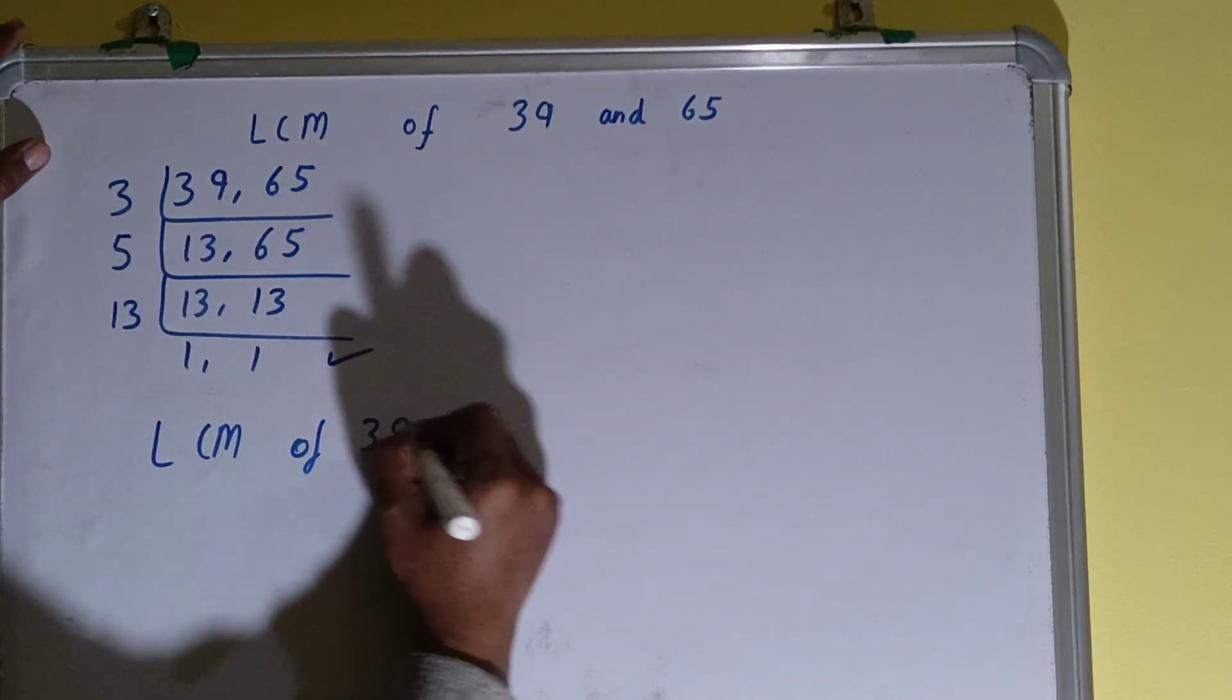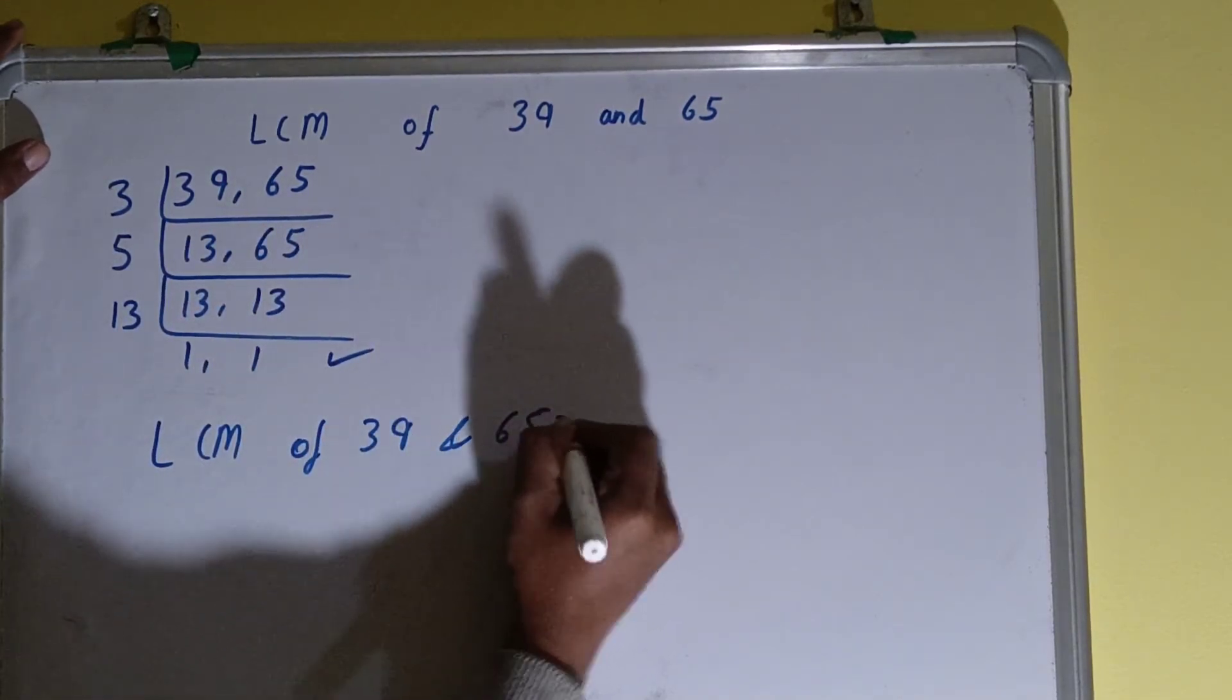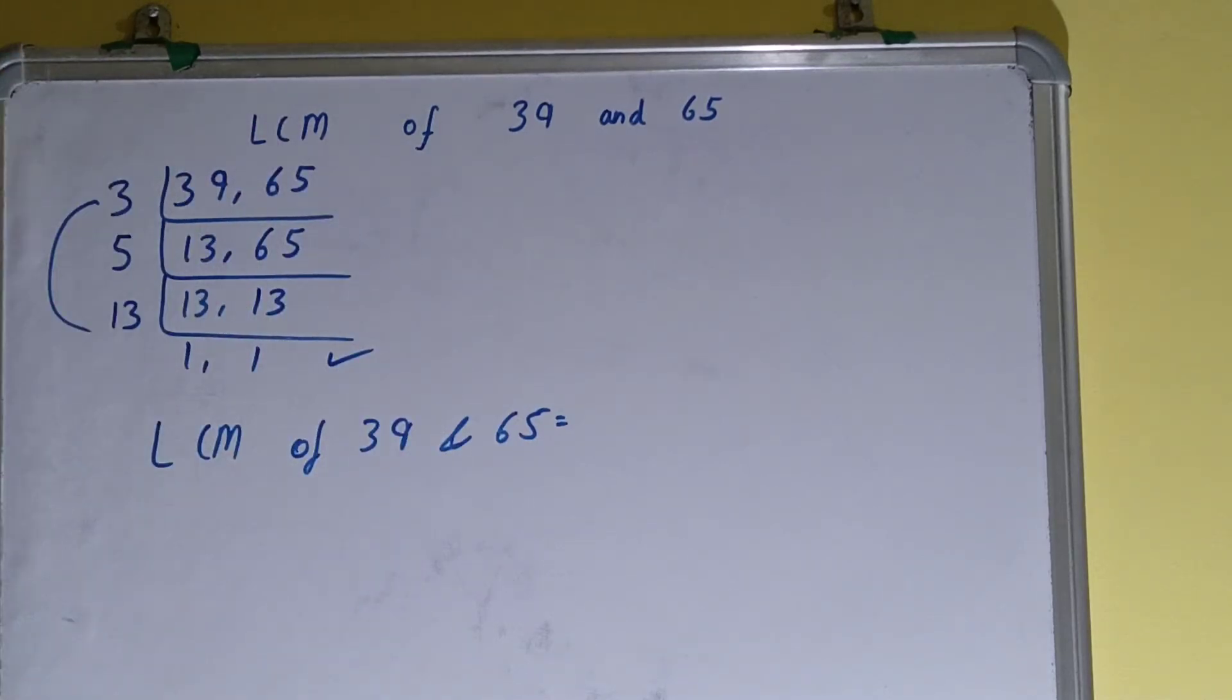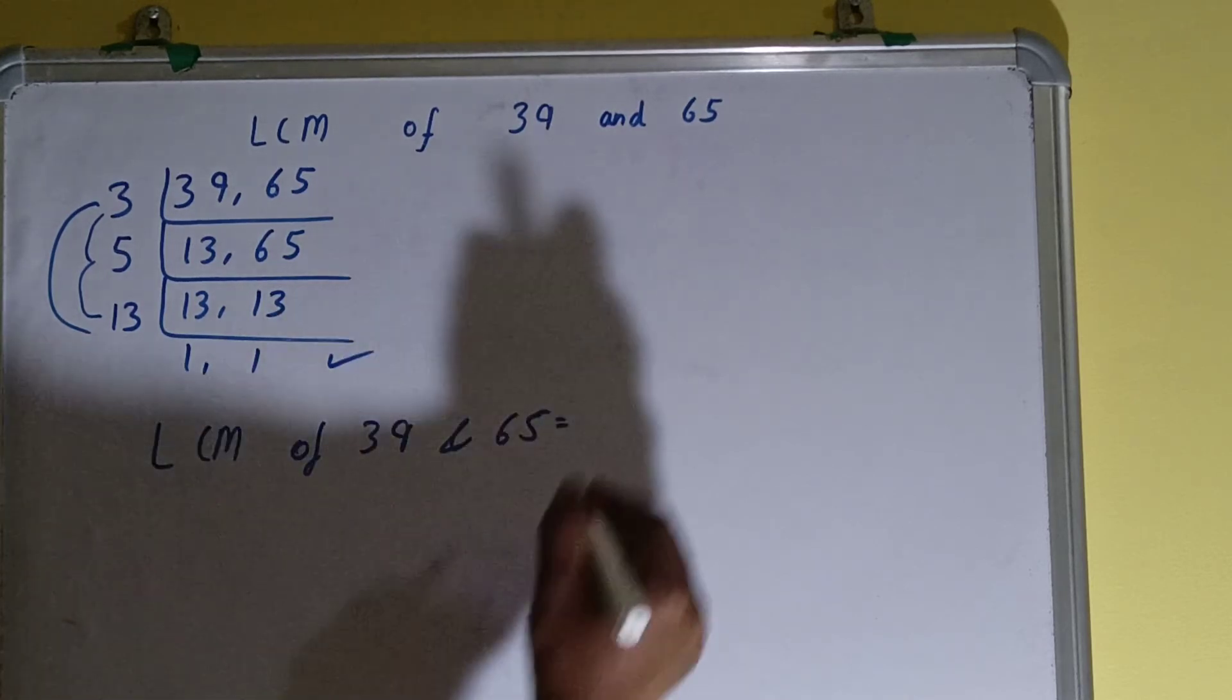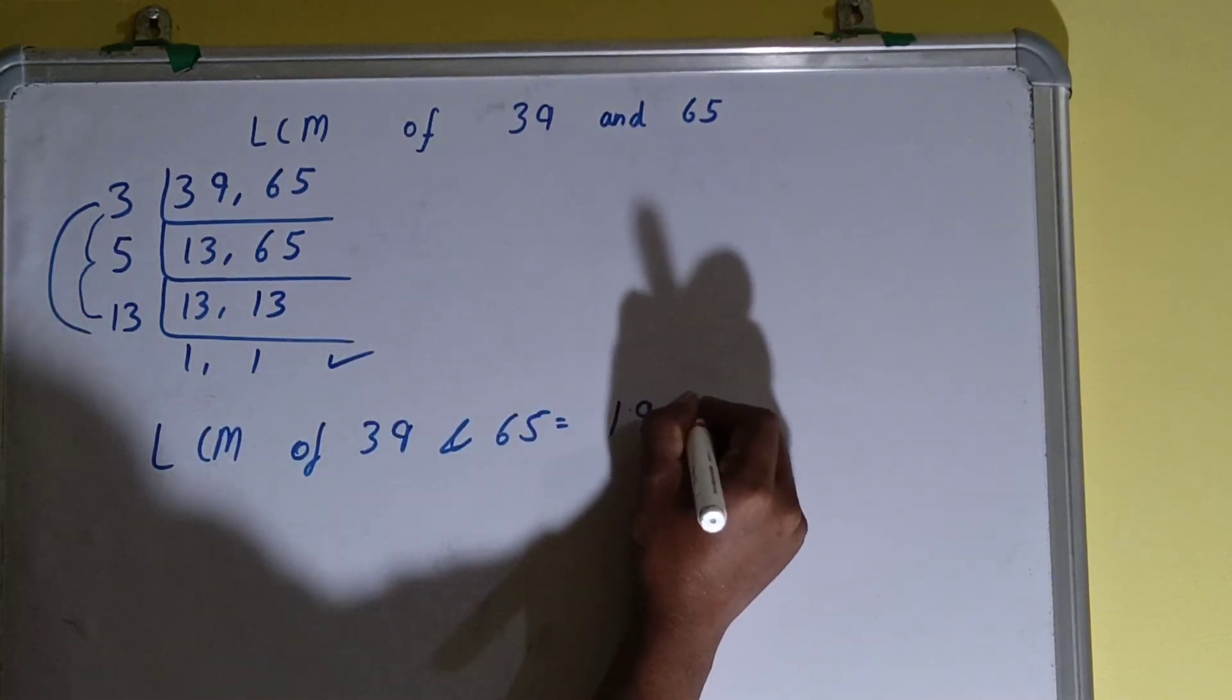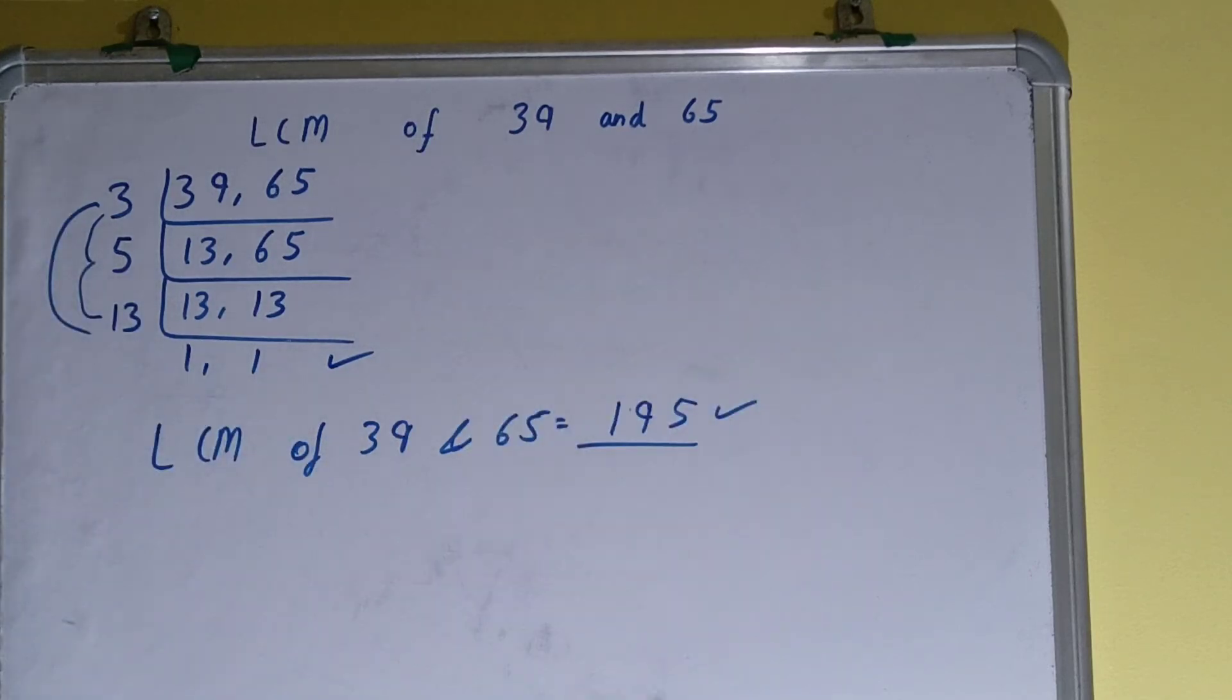LCM of 39 and 65 equals multiplying whatever you have on the left hand side, that is 3 times 5 times 13, which equals 195. So your answer or LCM will be 195.